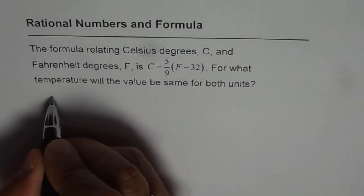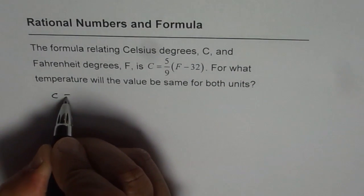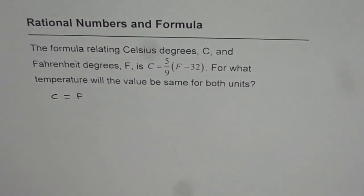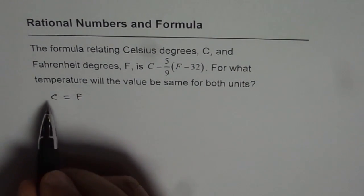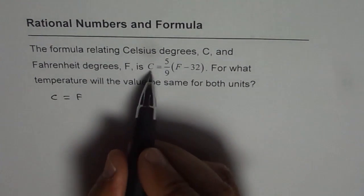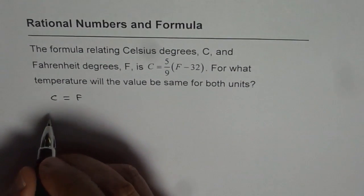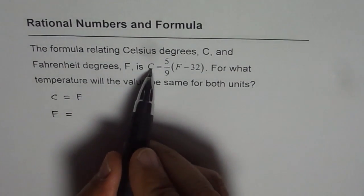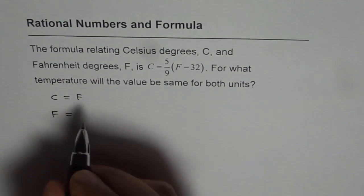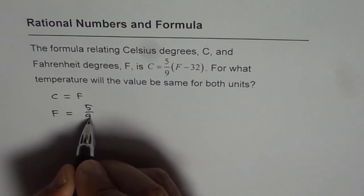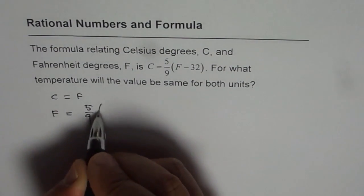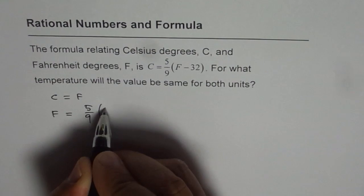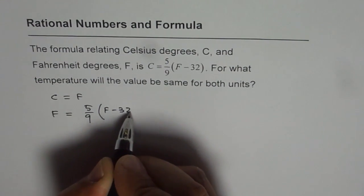What we can do is substitute C equals F in the formula and then find that temperature. So if C equals F, the formula becomes F equals 5 over 9 within brackets F minus 32.